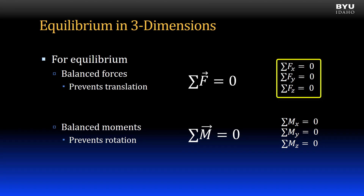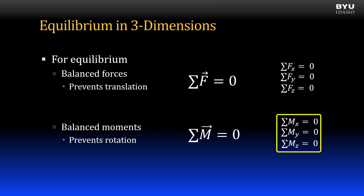When applied to three dimensions, we will have three force equilibrium equations and three moment equilibrium equations. Ultimately, we will have up to six independent equations of equilibrium, and therefore, since our problems are statically determinate, we will have up to six unknowns in our problems.